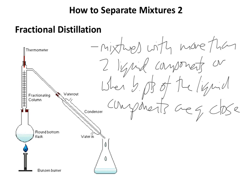What the fractionating column does is it stops that happening — it stops two liquids evaporating and reaching the thermometer as gases at the same point, if they have different boiling points. So if the two have evaporated at roughly the same point, the component with the lower boiling point will make its way through this column. This column is a long tube of glass with lots of glass shelving in the middle. The one with the higher boiling point will eventually condense back down, and the one with the lower boiling point will stay as a gas and make its way up to the thermometer.